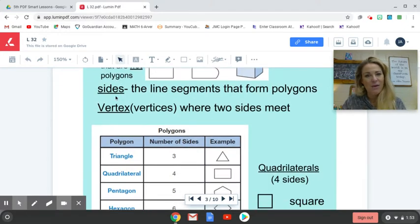More important vocabulary: sides are the line segments that form polygons. Vertex, or if there's more than one, vertices, are where two sides meet. So basically a point.